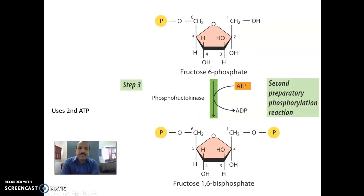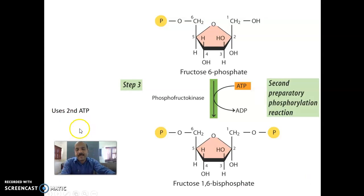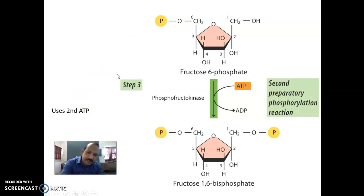The third step: fructose-6-phosphate is converted into fructose-1,6-bisphosphate. The first and sixth carbon atoms each contain a phosphate group. This is catalyzed by the important enzyme phosphofructokinase. As a result, another important ATP is also invested — that is the second ATP — making this the second preparatory phosphorylation reaction. So there are two important phosphorylation reactions: the first and second preparatory phosphorylation reactions, each with ATP investment, catalyzed by phosphofructokinase.